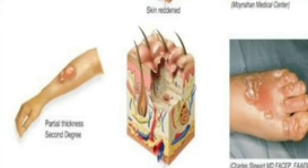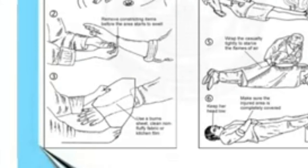Third degree burn में epidermis, dermis, नीचे तक पहुंच जाए। First degree burn, जिसको superficial burn भी कहते हैं, it involves only the top layer of the skin, and it is red and dry, and the burn is generally painful.